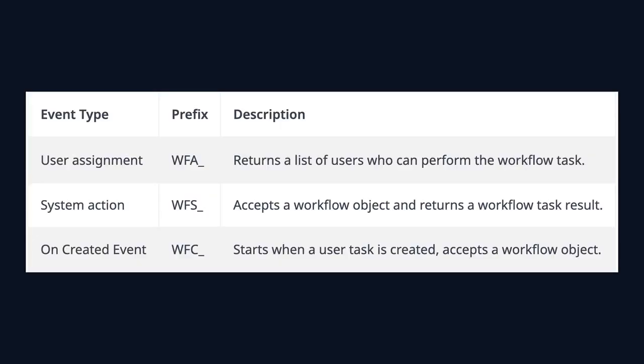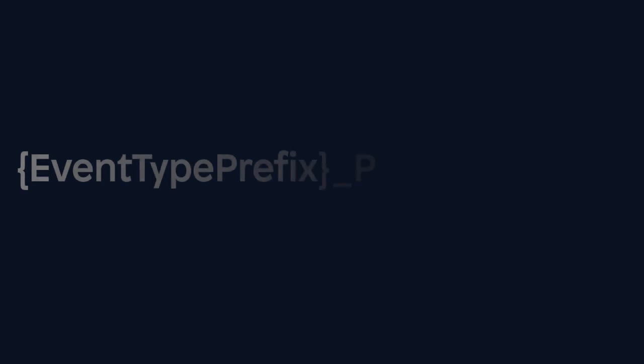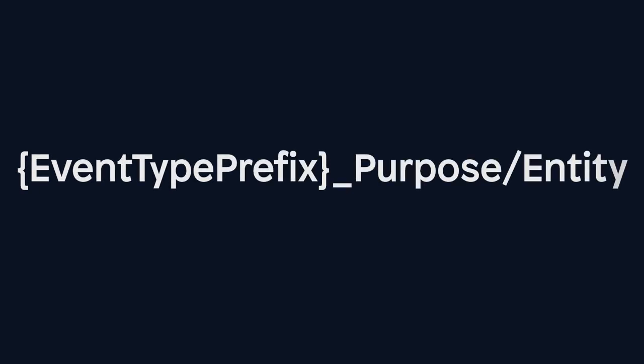Any microflows used in a workflow should also be named accordingly. If the microflow is used for user assignment, the prefix is WFA. Any flow used by the system receives WFS. And when a user creates a task, we use the prefix WFC to identify it as an uncreated event. Luckily, all of these follow the same pattern of event type, prefix, purpose, or entity.